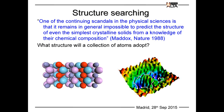Theoretically, as noted by Maddox, one of the continuous scandals in the physical sciences is that it is impossible to predict the structure of a material only from knowledge of its chemical composition. In other words: what structure will a collection of atoms adopt?